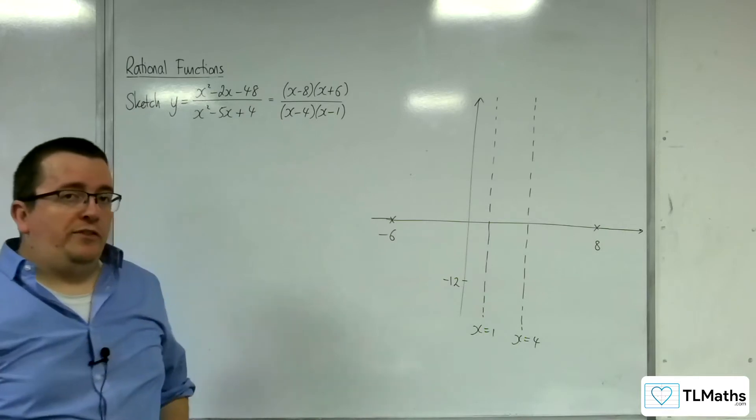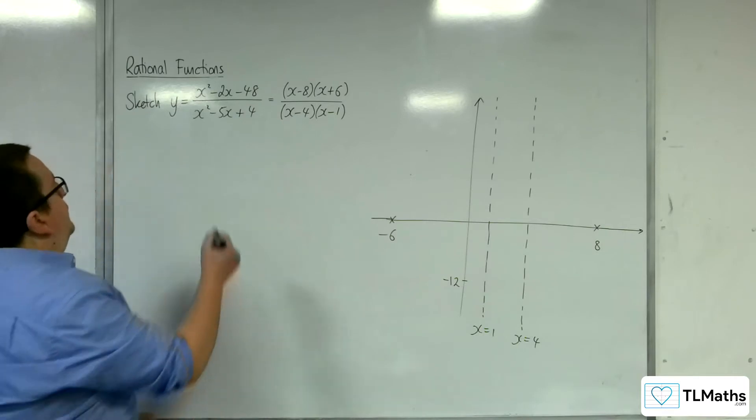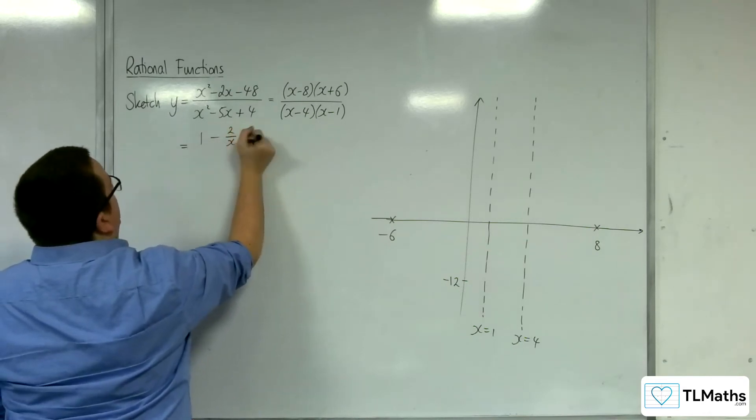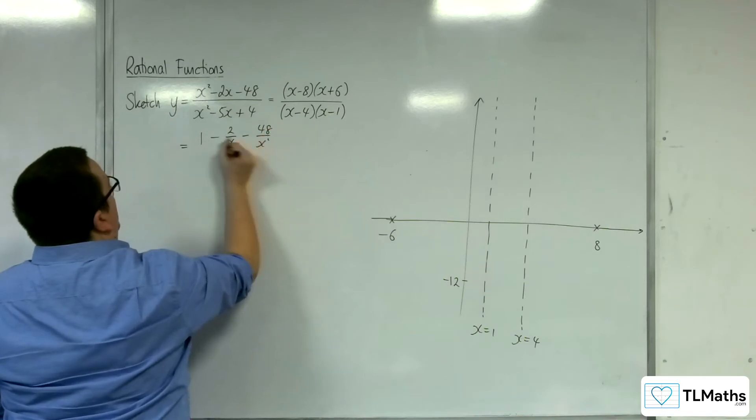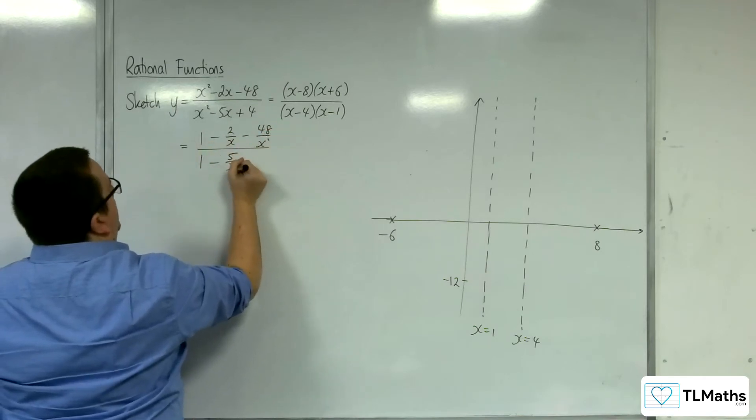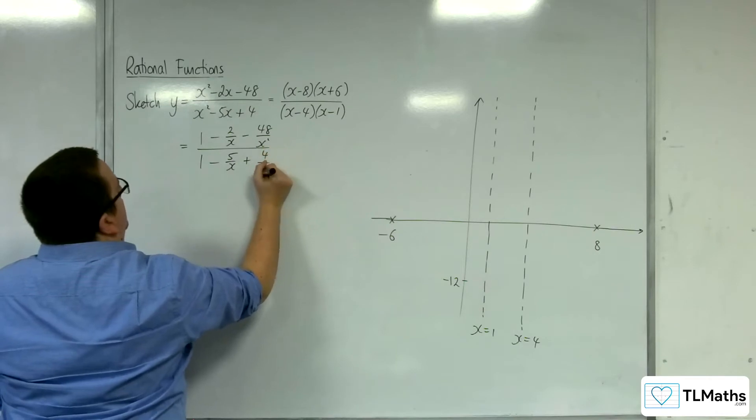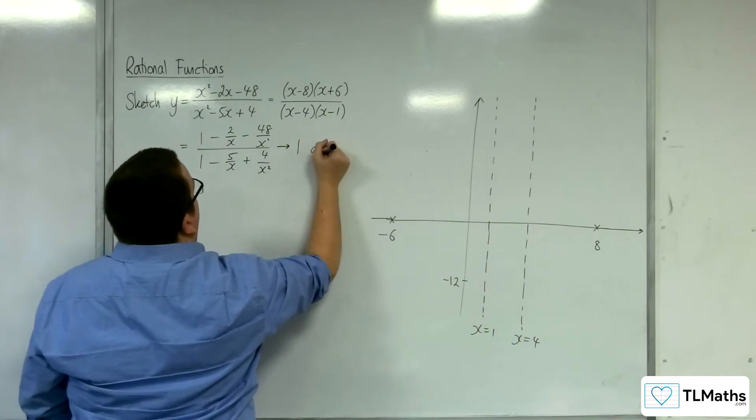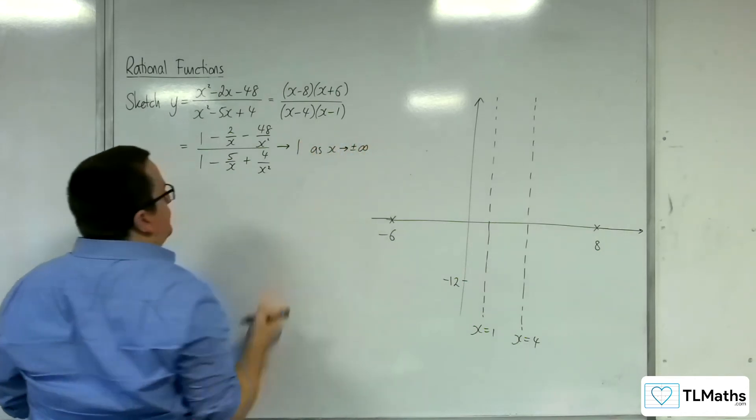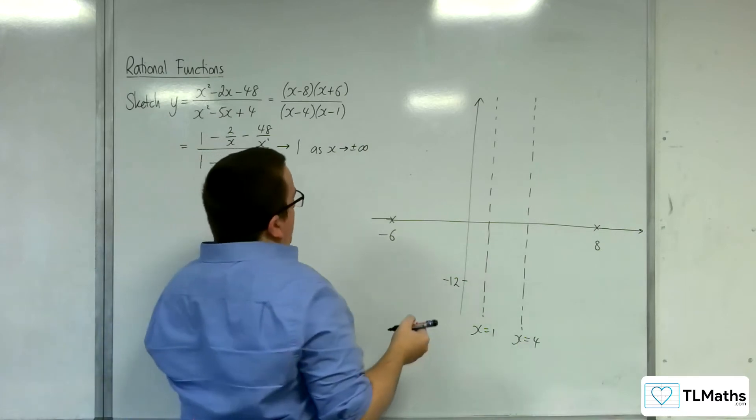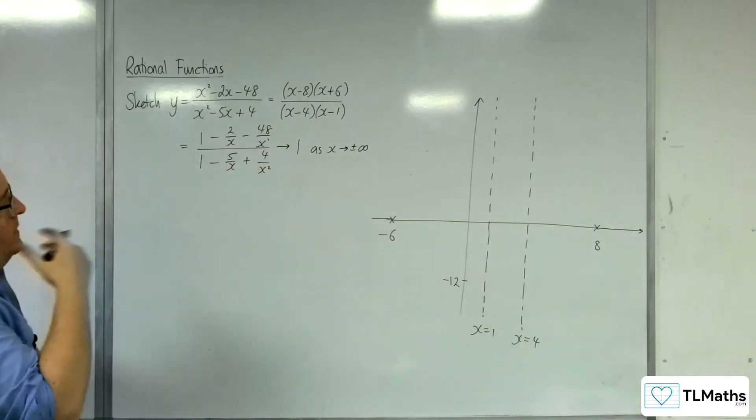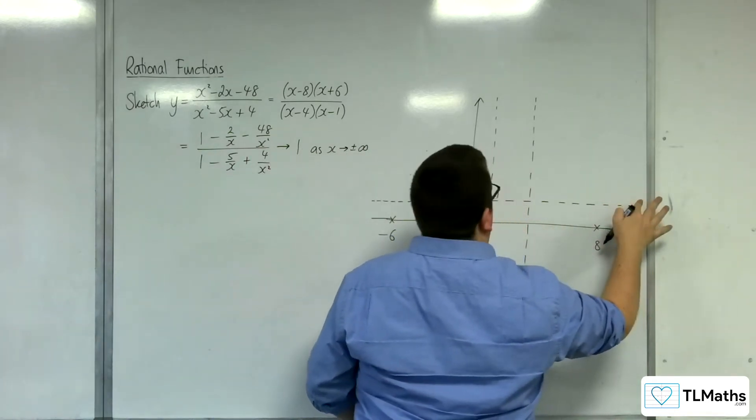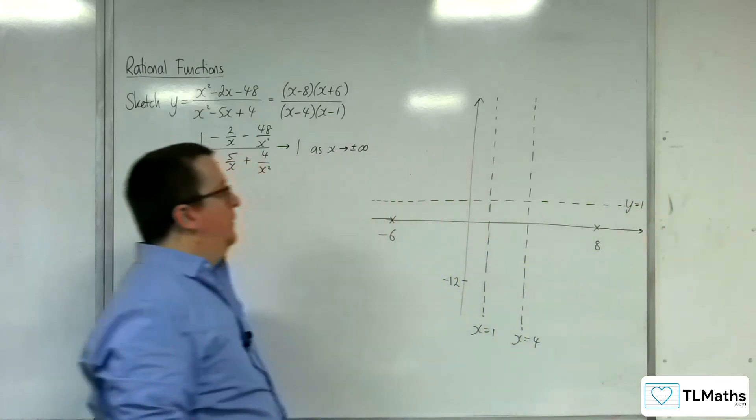How about horizontal asymptote? Well, divide top and bottom by x squared, and we can see that we're going to get 1 over 1, as we have been getting in the previous examples. So as x tends to positive or negative infinity, this will tend to 1 over 1. So y equals 1.